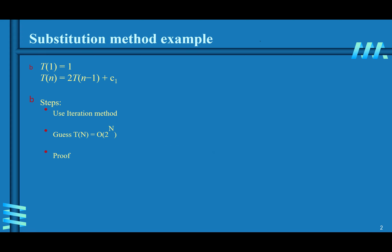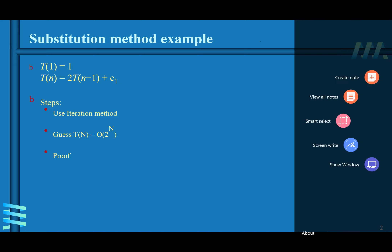Let's take a look at an example where we use substitution methods. Assume we already derived a recurrence relation: T(1) = 1, T(n) = 2·T(n−1) + c1, where c1 is a constant.